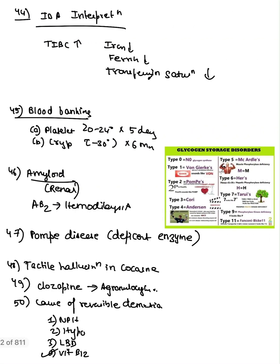Iron deficiency anemia interpretation: serum iron decreases, ferritin (the storage form) decreases, and transferrin saturation decreases. Normally, out of six transferrin molecules two can bind, giving 33% saturation — but this decreases in iron deficiency anemia.